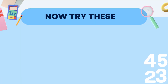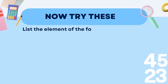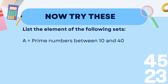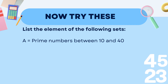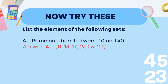Now let's list the elements of the following sets. Set A: prime numbers between 10 and 40. We write capital A, put an equals sign, open curly brackets, and list the prime numbers between 10 and 40. The elements are: 11, 13, 17, 19, 23, and 29.